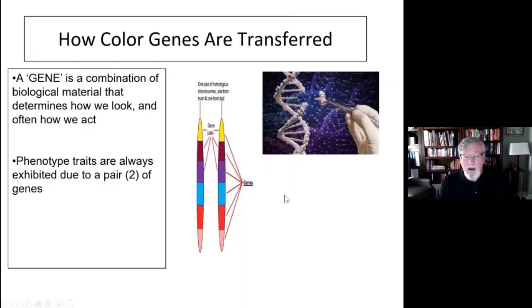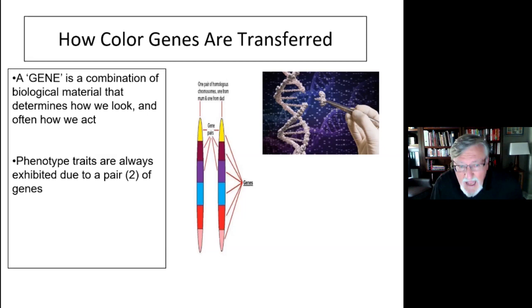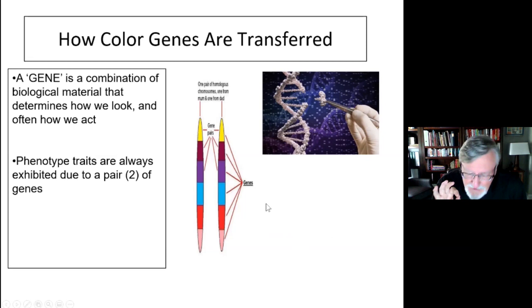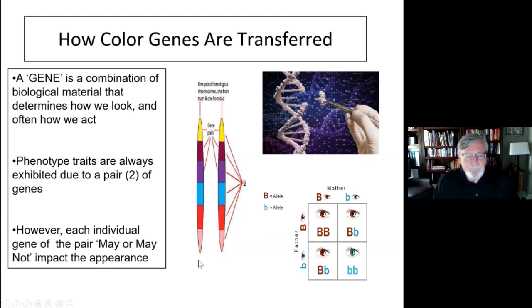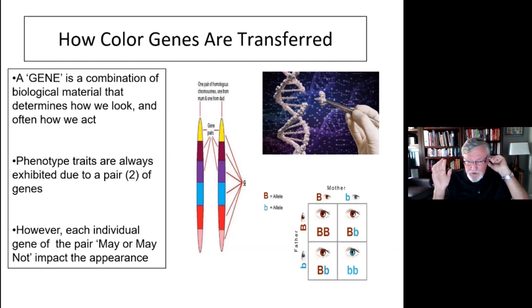Phenotype is always exhibited due to a pair of genes. When you get to the advanced class, I'll talk about a modifier called rufus, which has six modifying genes, but in each case only half can possibly be transmitted. Phenotype traits are always exhibited due to a pair of two genes. Each individual pair may or may not impact the appearance. If they're dominant, they will show. If they're recessive, they won't — unless they are homozygous, meaning there are two of that recessive.